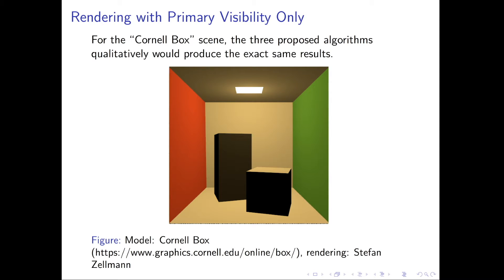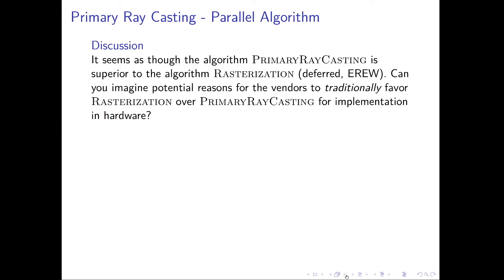Under our assumptions — only primary visibility, no semi-transparent geometry, only point light sources, and simple diffuse Lambertian materials — all three algorithms (rasterization, deferred rasterization, and primary ray casting) should produce qualitatively the same results, with only minor differences in floating-point accuracy and visibility decisions. We will now gradually extend the ray casting algorithm to increase image fidelity, step by step, until we arrive at something we would call a photorealistic image.